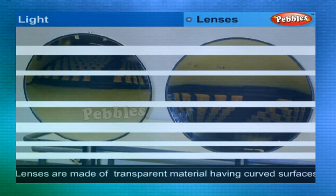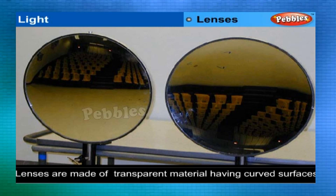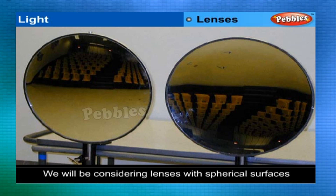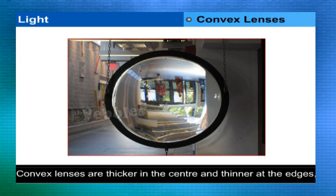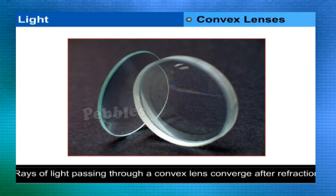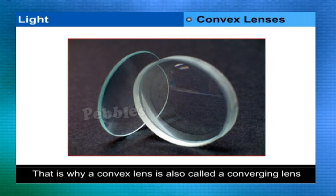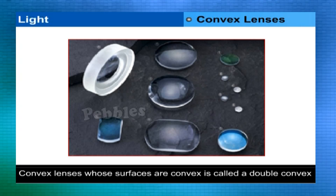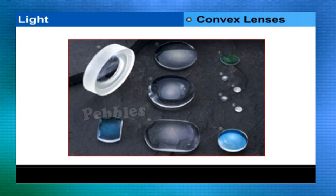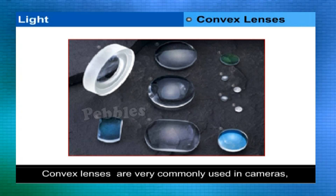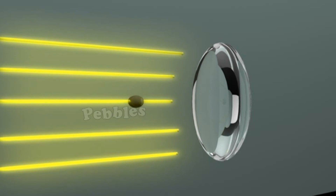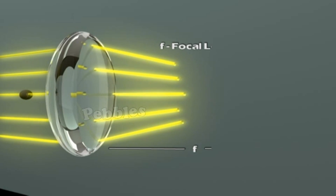Lenses are made of any transparent material with polished curved surfaces, which may be spherical or cylindrical. Convex lenses are thicker in the center and become thinner at the edges. Rays of light passing through a convex lens converge to one point after refraction — this is why a convex lens is also called a converging lens. A convex lens with both surfaces convex is called a double convex lens. These lenses are commonly used in cameras, projectors, telescopes, and microscopes. A beam of light parallel to the principal axis converges at a point F called the focus of the lens.